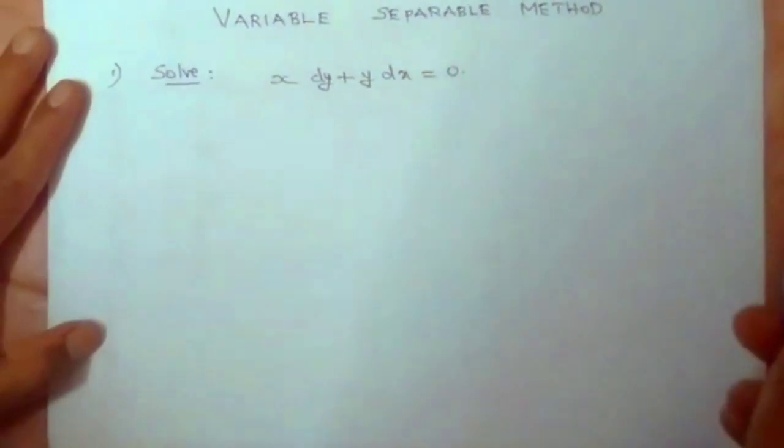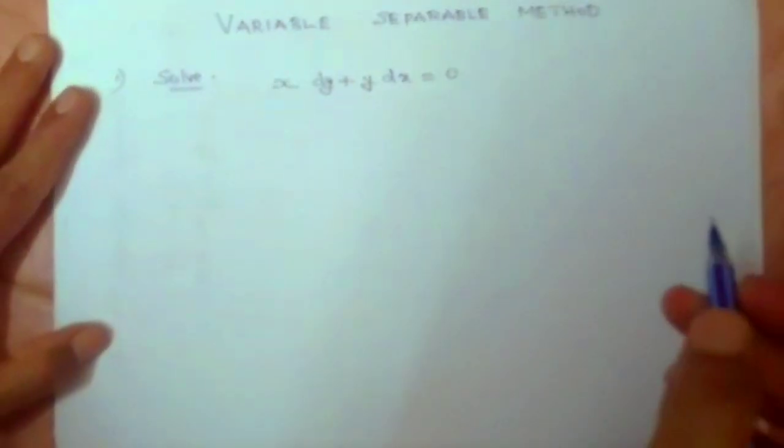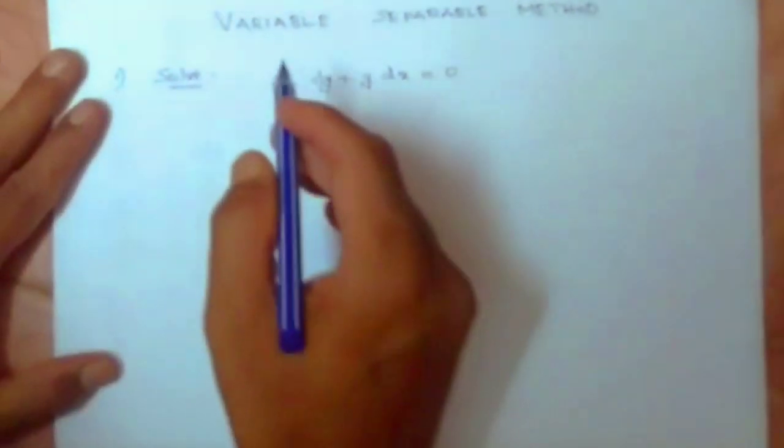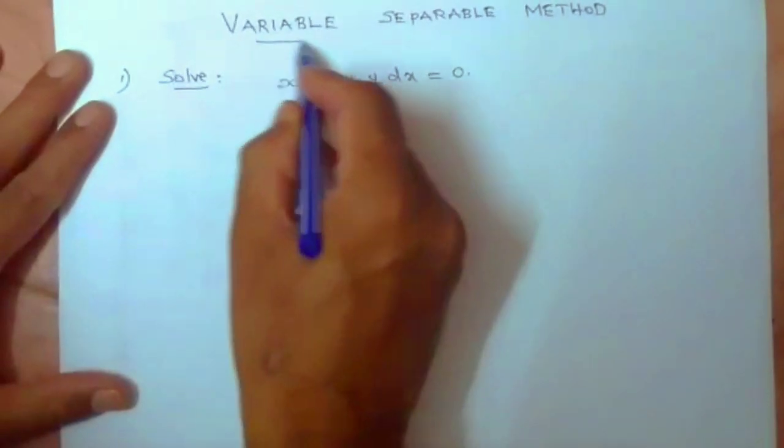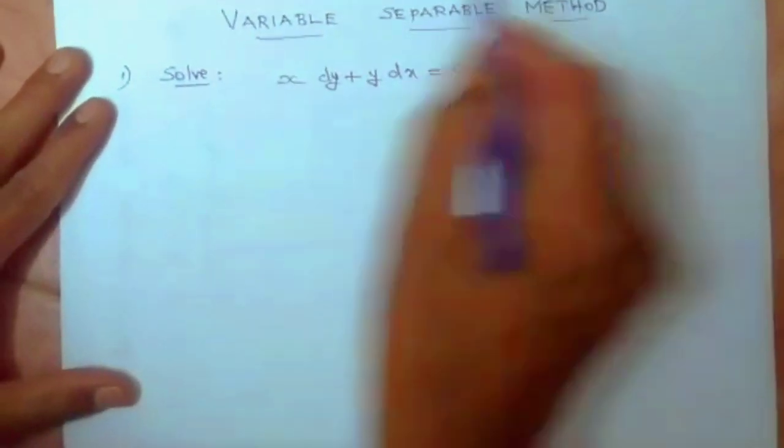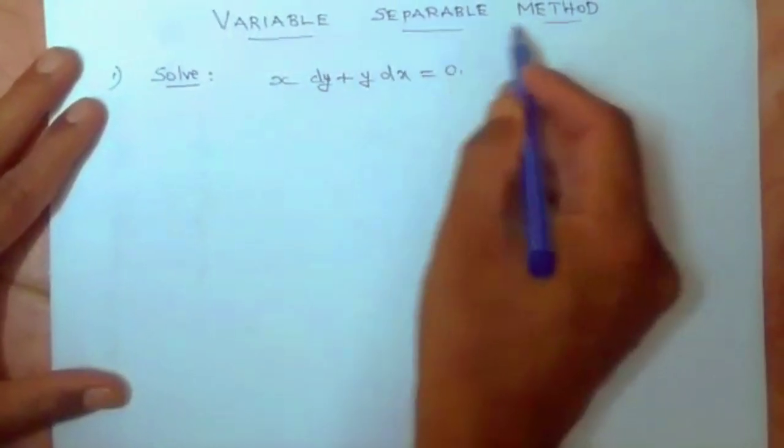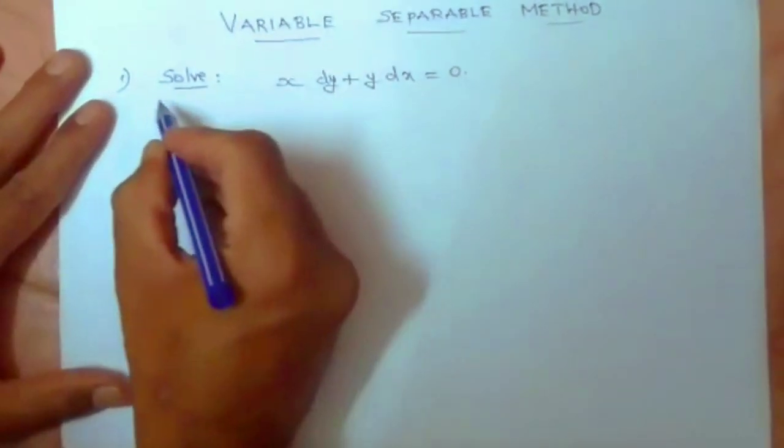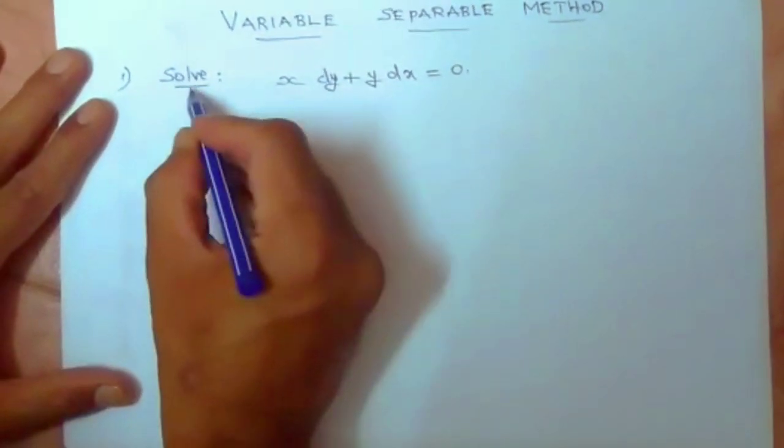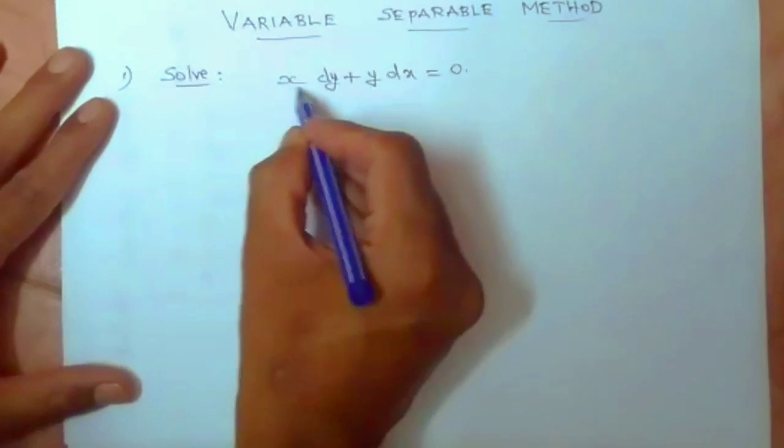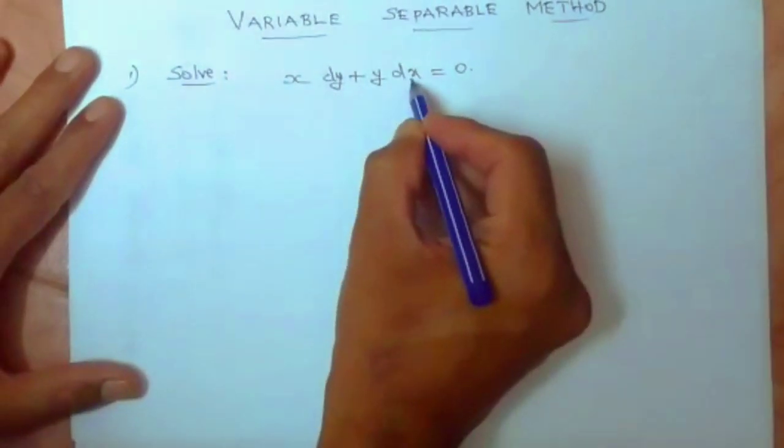Hi students, this is the topic we are going to discuss under differential equations: variable separable method. The problem given to us is solve the simple equation x dy plus y dx equal to zero.